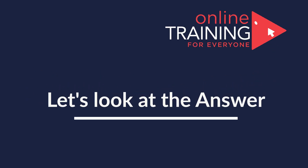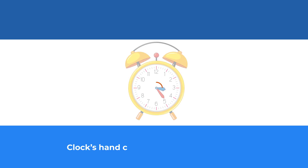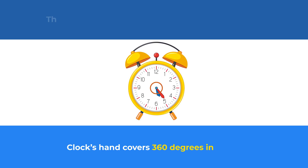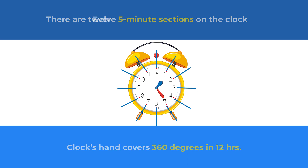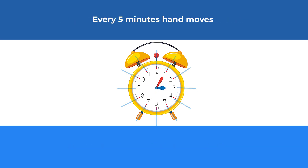Because the clock's surface is a circle, the clock hand covers 360 degrees in 12 hours. There are 12 five-minute sections on the clock, and every 5 minutes the hand covers 30 degrees, which is calculated as 360 degrees divided by 12, which equals 30 degrees.